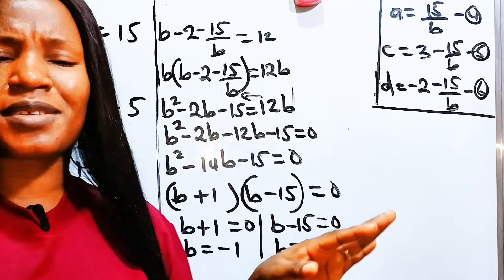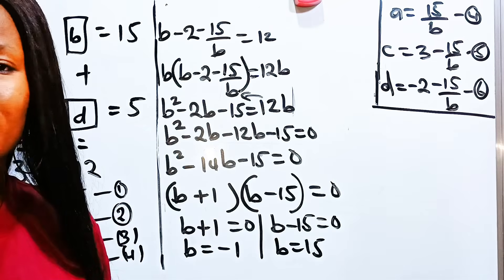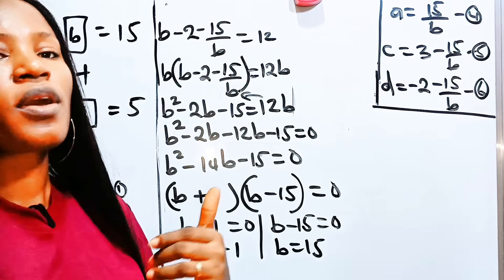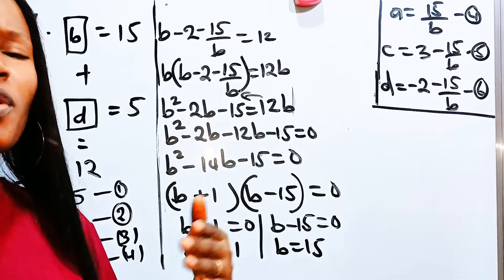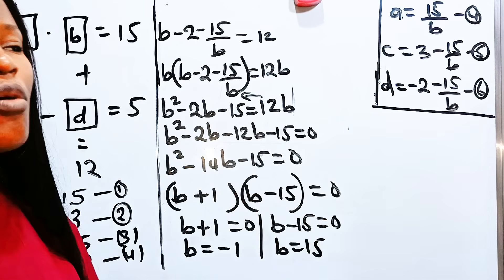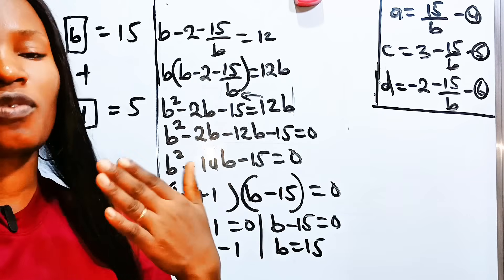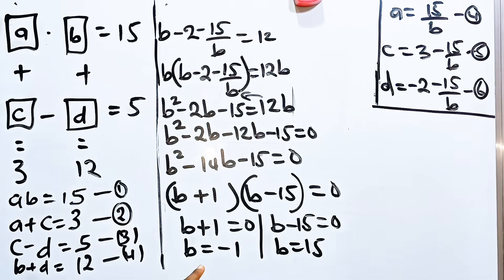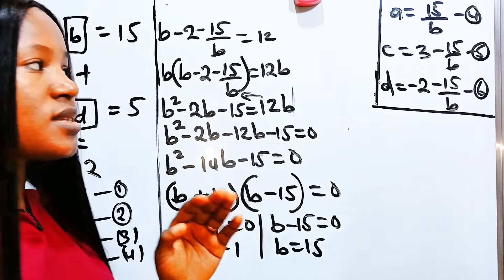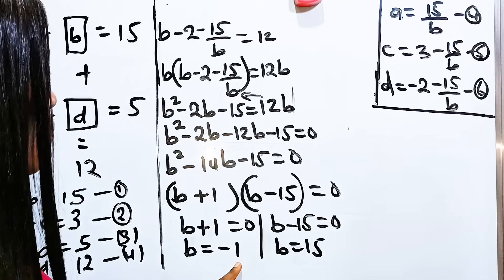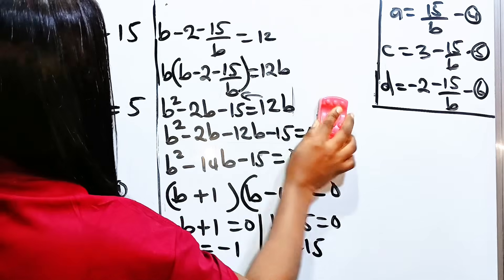Hit the subscription button and turn on your notification bell. If this is your first time, give us a thumbs up, and let us know in the comments what we should do to improve. Now we have two cases: Case 1 when B equals minus 1, and Case 2 when B equals 15.